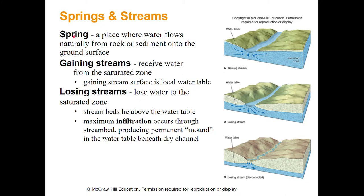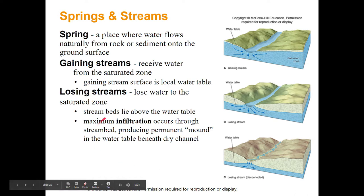A spring is simply a place where water comes out of the rock - if you're hiking and see water coming out of the ground, that's a spring. There are gaining streams where the water table flows into the streams, and losing streams where the stream flows out into the water table.